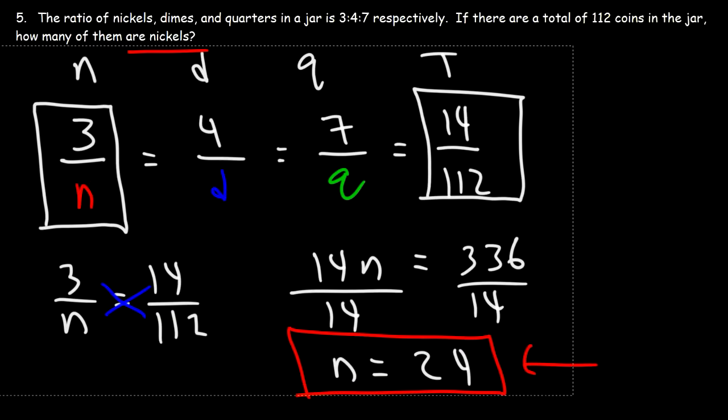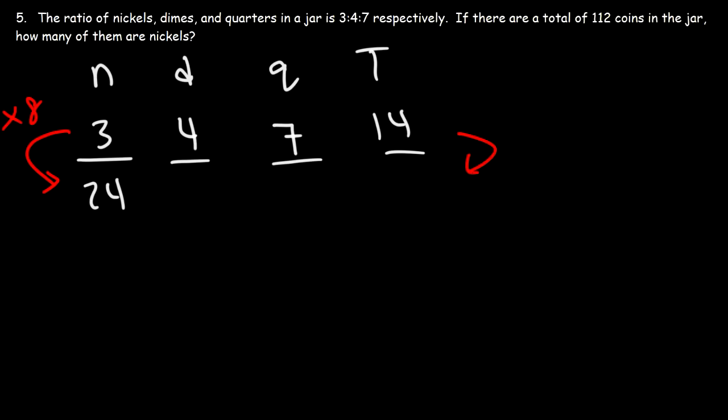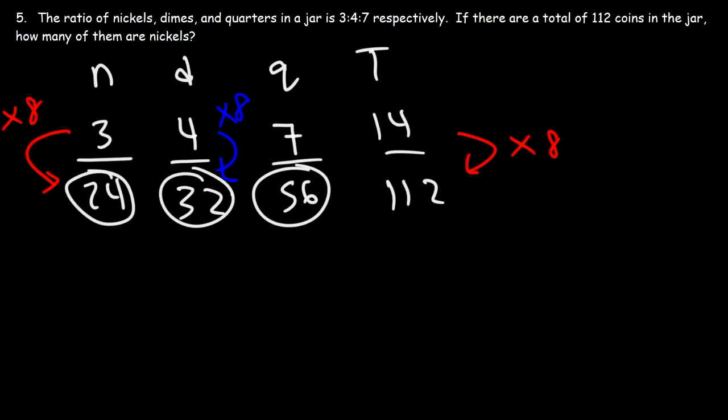By the way, if you want to find the rest, here's what you can do at this point. Let's write our ratios of nickels, dimes, quarters, and the total. So it's 3 to 4 to 7 to 14. Now, for nickels, we have 24 in the bottom. To go from 3 to 24, we need to multiply by 8. And if we multiply 14 by 8, that will give us 112, the total number of coins. To find the total number of dimes, we need to multiply 4 by 8. 4 times 8 is 32. And to find the number of quarters, it's going to be 7 times 8, which is 56. And you can check it. If we add 24, 32, and 56, it should give us the total number of coins in the jar, which is 112. So there's 24 nickels, 32 dimes, and 56 quarters.